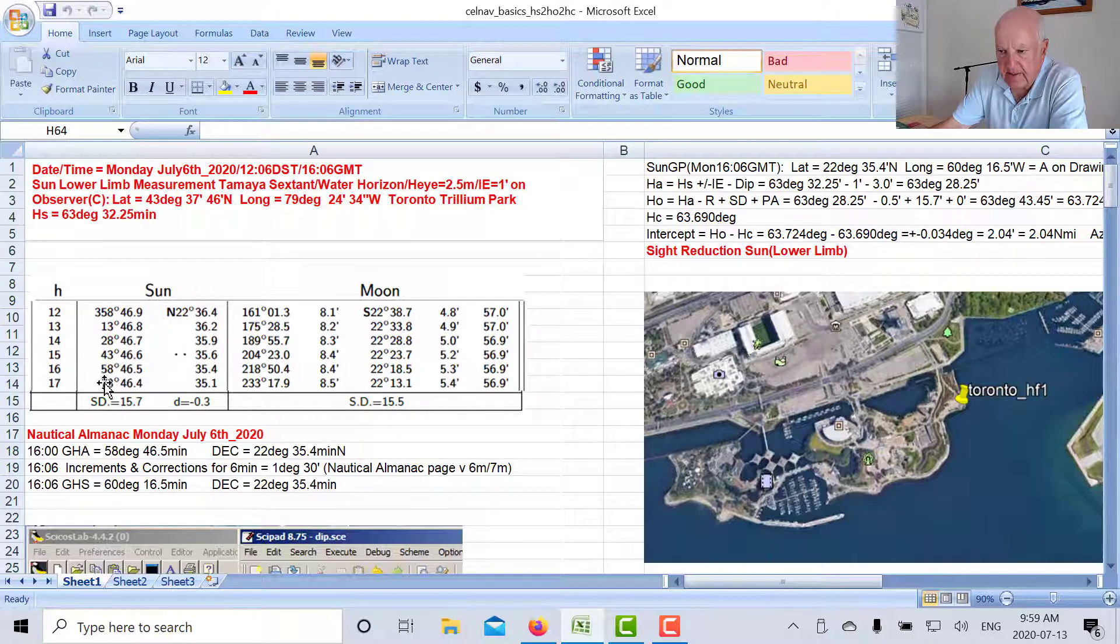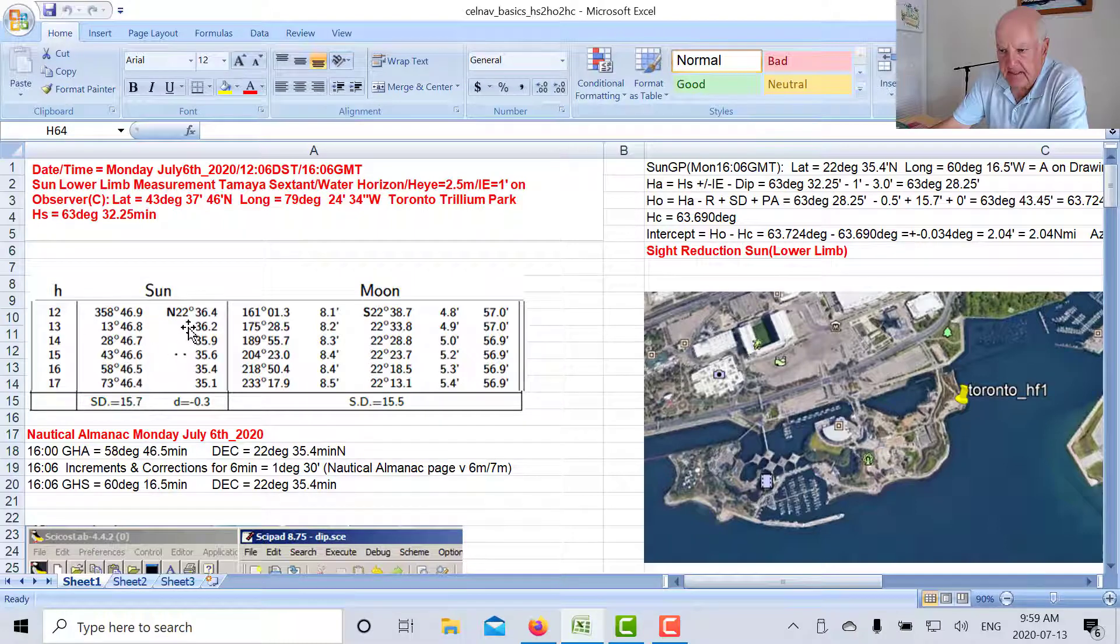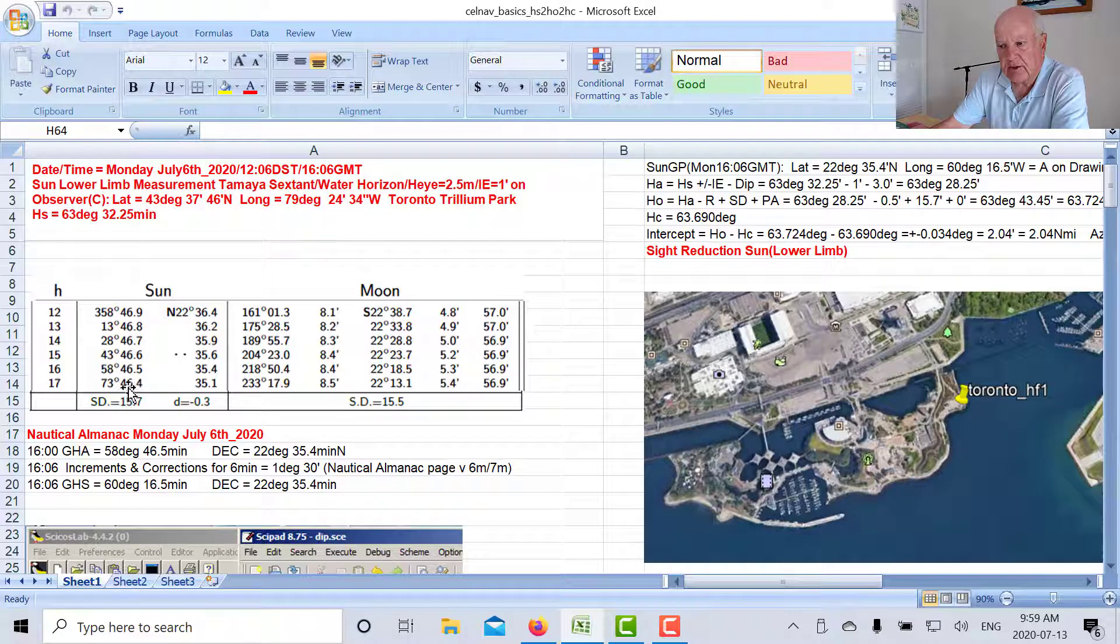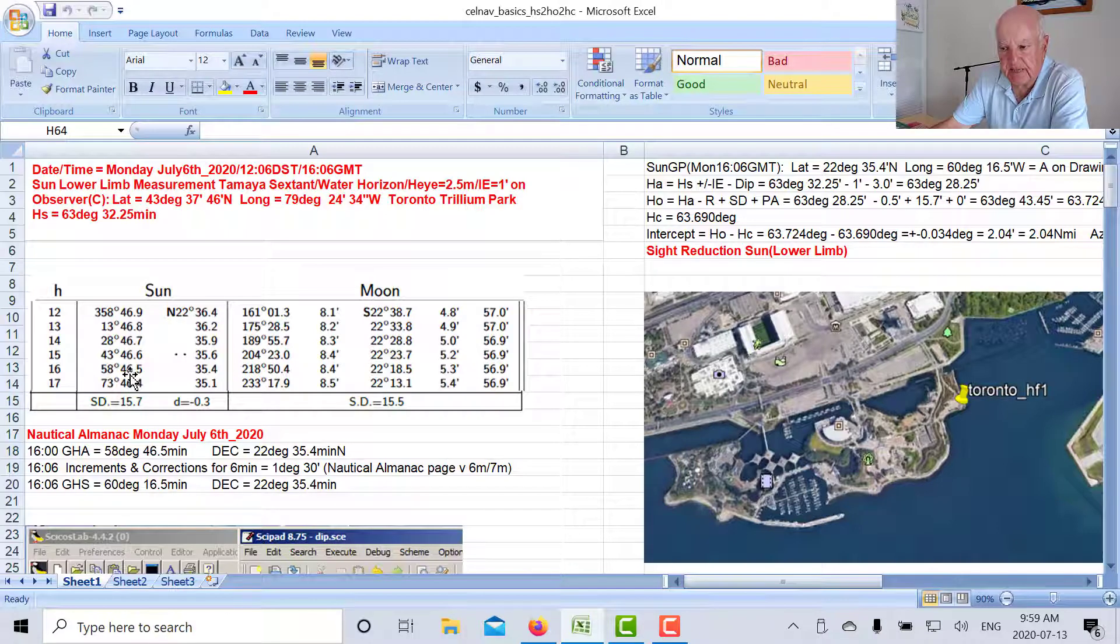So there's the sun and the moon, that's the hour. So at 1600 the Greenwich hour angle of the Sun was 58 degrees 46.5 minutes and the declination was 22 degrees 35.4 minutes. Now we have to adjust this. We can use an interpolation routine with a calculator or we can just go to increments and corrections at the back of the almanac.